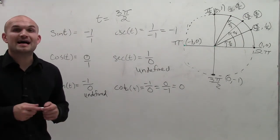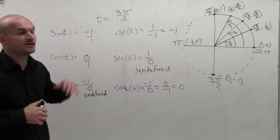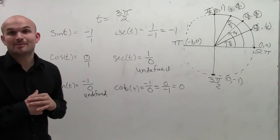That's how you evaluate the six trigonometric functions for our given point, 3π/2. Thanks.